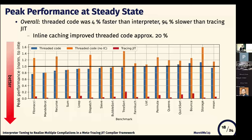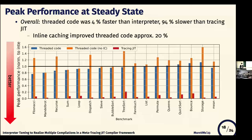Next, we show the result of peak performance at steady state. Note that the y-axis is elapsed time normalized to interpreted execution. The blue, orange, and red bars are threaded code, threaded code with inline caching, and tracing JIT respectively. Overall, threaded code with inline caching is 4% faster than interpreted execution, but 24% slower than tracing JIT. In particular, inline caching improved threaded code performance by approximately 20%.